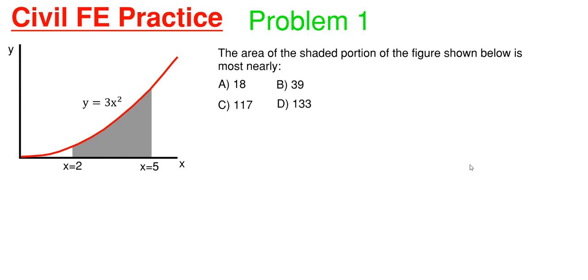So this will be our first problem in this new civil FE practice series. And what we have going on here is that we have to determine the area of the shaded portion of the figure shown below is most nearly to one of these four answers. So we have to determine this area of this gray region here utilizing the curve.